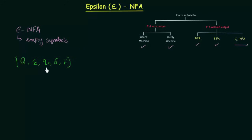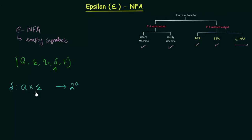The components q, sigma, q0, and f are the same as in the regular NFA. The only thing that is different is del. In our regular NFA, del was defined as q cross sigma to 2 power q — meaning any state on getting any input could go to any of the 2 power q states. But in Epsilon NFA, we have union Epsilon added to the sigma, meaning a state can also transition on seeing nothing.